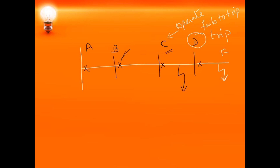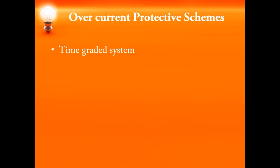We will see them one by one. The first one is a time graded system. In a time graded system, we set a timing unit for each of the circuit breakers used. For this time graded system, the type of relay used is the definite time overcurrent relay. Definite time overcurrent relays are used wherever you need a time graded system. In a definite time overcurrent relay, irrespective of the magnitude of the fault current, the circuit breaker will trip at the same preset time.